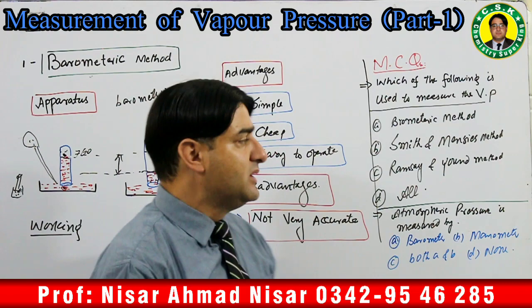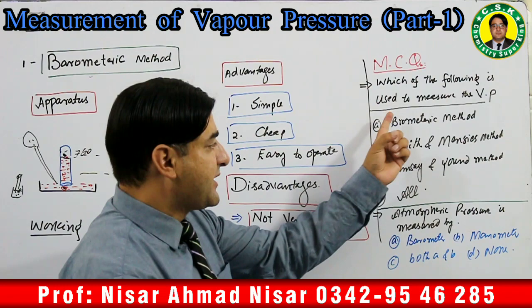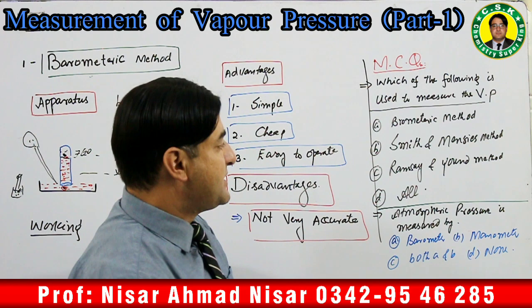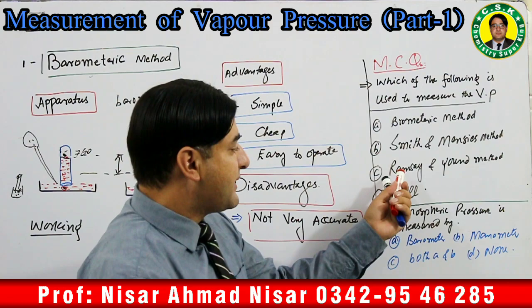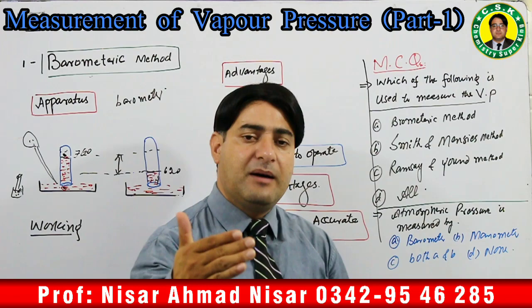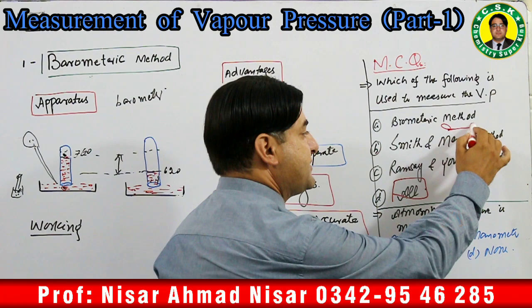Ab ek do MCQs par baat karta hoon. MCQ: Which of the following is used to measure the vapor pressure? Options: barometric method, Smith method, Manometric method, Ramsay and Young method, all of these. Students, vapor pressure measure karne ke methods mein barometric method, manometric method, Smith method, aur Ramsay and Young method sab shamil hain. To is case mein hamaara answer hoga: all of these.